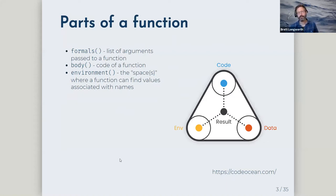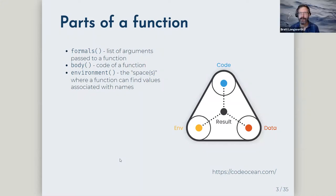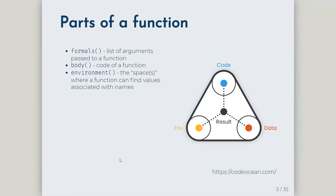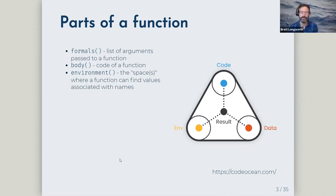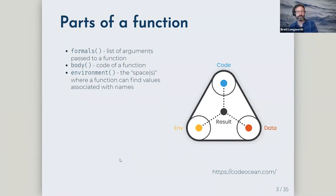The formals are the list of arguments passed to a function. The body is the actual code that makes the function work. The environment is the space where a function finds its values associated with the names used in the function. The most useful thing as an R coder is just to know that 'closure' is another word for a function.